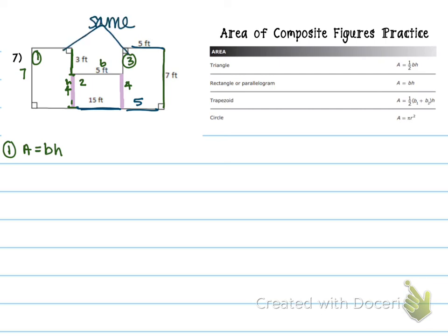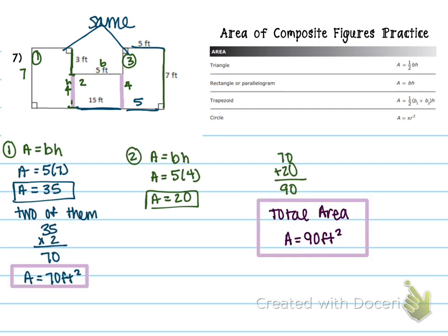So when you get the answer to number 1, all you have to do is multiply it by 2. And if you didn't understand that, do all 3 figures, and then you'll figure out what I said at the end. But those are the same. So just to make sure you understand that. Okay. So your total area is 90 feet squared. 90 feet squared.